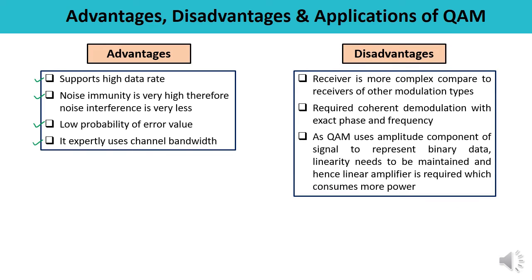Now let us talk about the disadvantages. In the case of the receiver, where we have to reconstruct or recover the original signal, the receiver is more complex compared to the receiver of other modulation types. It requires coherent demodulation with exact phase and frequencies, which could be a limitation. Since QAM uses the amplitude component of the signal to represent binary data, linearity needs to be maintained, meaning a linear amplifier is required — and a linear amplifier consumes more power. That is one of the disadvantages of QAM.